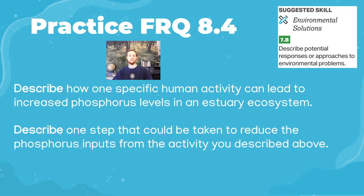For practice FRQ 8.4: describe how one specific human activity can lead to an increase in phosphorus levels in an estuary ecosystem. Then describe one step that could be taken to reduce the phosphorus inputs from the activity you described.